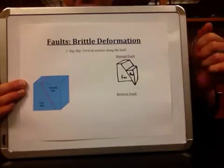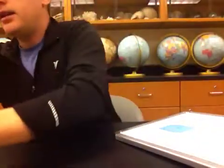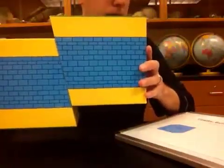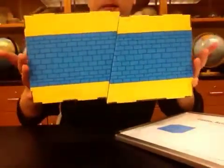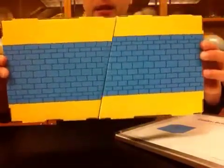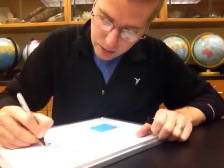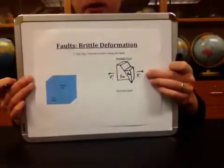The important thing to think about is what stress would allow that kind of motion. If I push my two hands on the sides together, the block moves up the fault surface. So to get the motion of a normal fault, I have to pull my hands apart, and as I do that, normal fault motion takes place. The stress in a normal fault is tensional — stress pulling out to the sides.